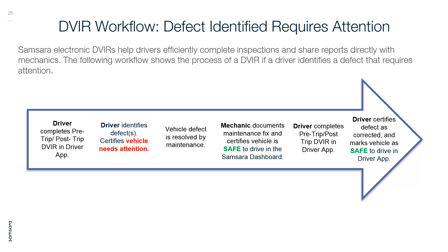DVIR Workflow — Defect Identified: The following workflow shows the process when a driver identifies a defect requiring attention. The driver completes a pre- or post-trip inspection in the Driver App and identifies defects, certifying the vehicle needs attention. The vehicle defect is resolved by maintenance. The mechanic documents the fix and certifies the vehicle as safe to drive in the Samsara dashboard. The driver then completes another inspection, certifies the defect was corrected, and marks the vehicle as safe to drive.